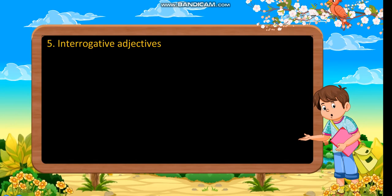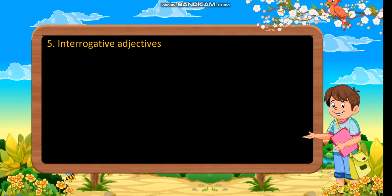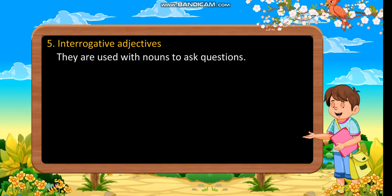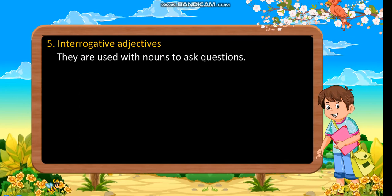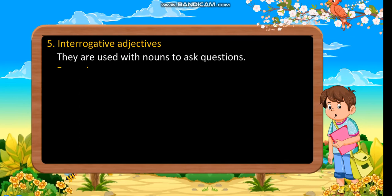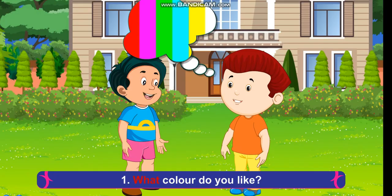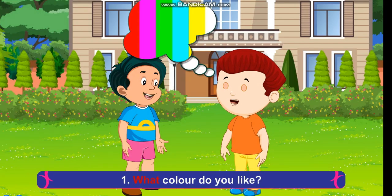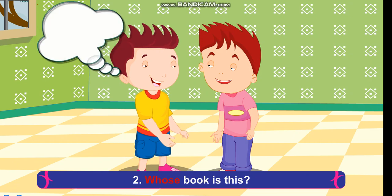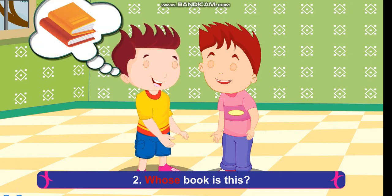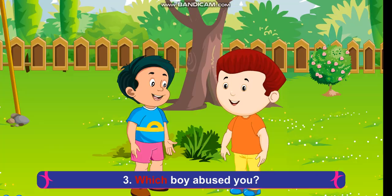Interrogative adjectives: they are used with nouns to ask questions. Examples: What colour do you like? Whose book is this? Which boy abused you?